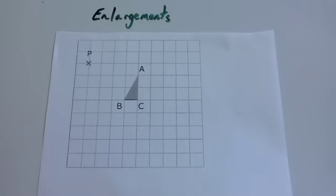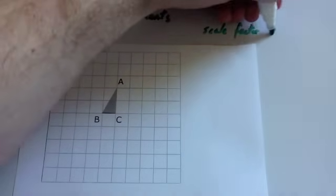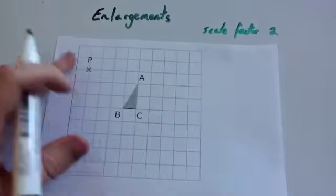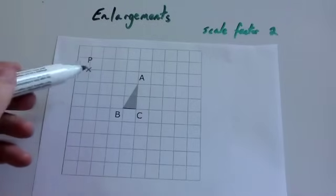And the last thing you need is a scale factor of enlargement. In this question we're going to use scale factor of enlargement 2. What that means is that all the points are going to be twice as far away from P.